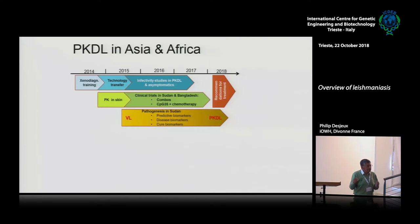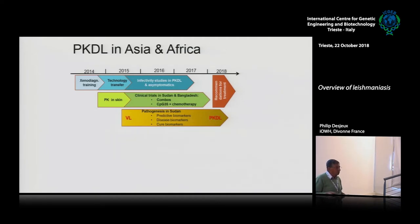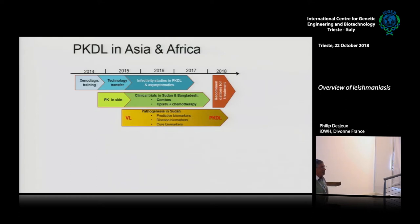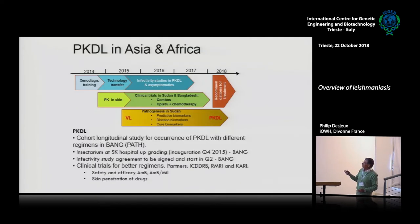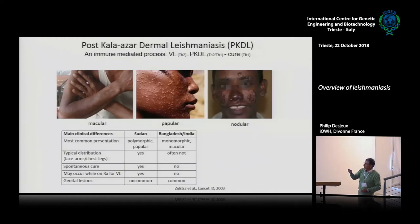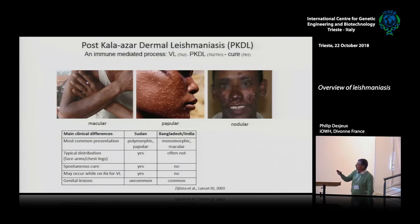We were fighting in each meeting, guessing that PKDL maintains transmission. But the first thing to prove is that they are infective for the sand flies. If they are, we have to focus on these cases to break the transmission related to PKDL. That's why we did what we call xenodiagnosis. Before explaining xenodiagnosis, note there are three major clinical forms of PKDL: macular, papular, and nodular. Let's see if these cases transmit the disease.